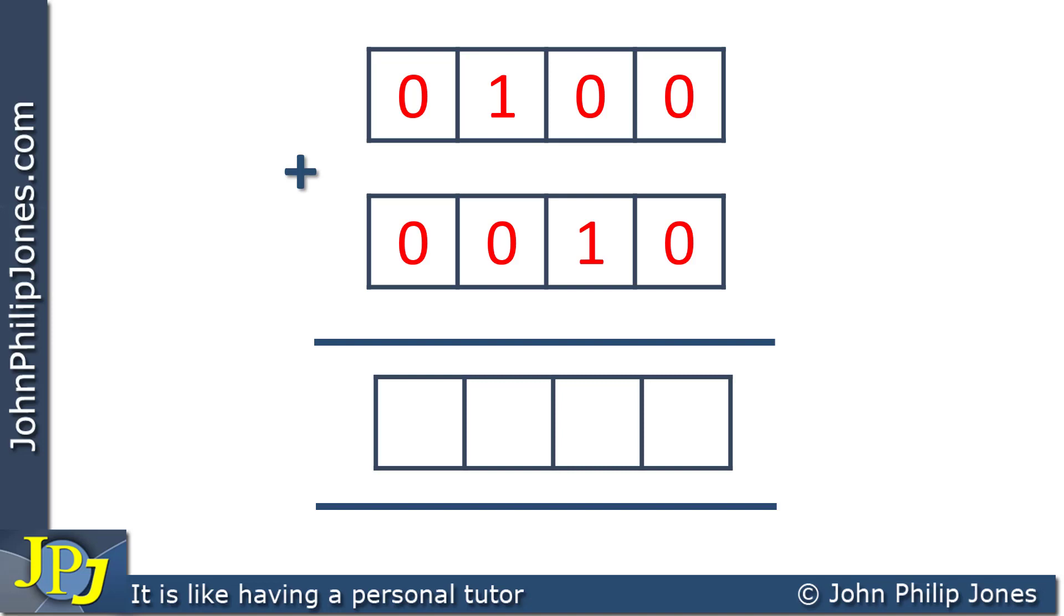Now, to perform the addition, you do it to each column in turn. So I come to this column, and I'm adding a 0 plus a 0, which we know is 0, so you can see 0 appears here. We move on to this column, and it's a 0 plus a 1. Consequently, a 1 will be placed here. Then we come to this column, and a 1 plus a 0 is a 1, so we place the 1 here. And then we go to the final column, and a 0 plus a 0 is a 0, which we place here.